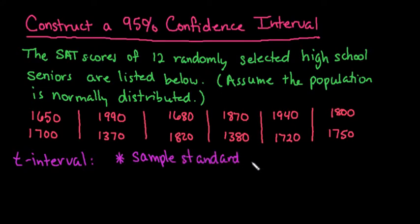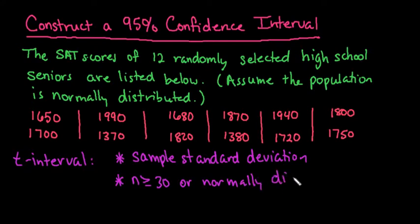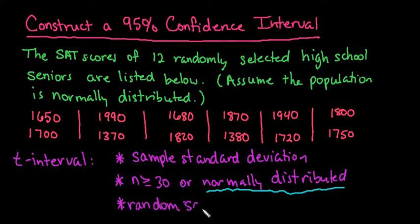You have to have a sample size that is greater than or equal to 30, or normally distributed. We don't have a sample greater than or equal to 30, but it does say we can assume it is normally distributed. The last thing that's always important is that you have a random sample, which helps make it more likely to be representative of the entire population.